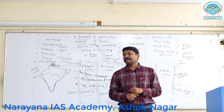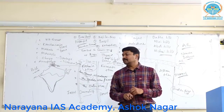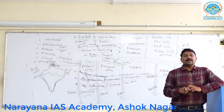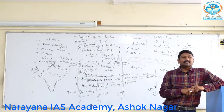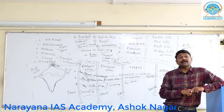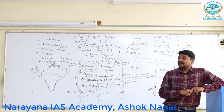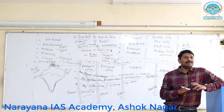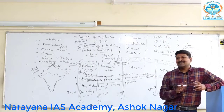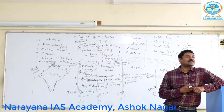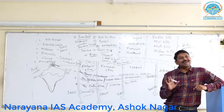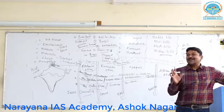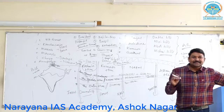The fresh water lakes are Wular Lake and Dal Lake. Wular Lake is a fresh water lake, and it is an oxbow lake — not a 'cow bow' lake, but an oxbow lake.